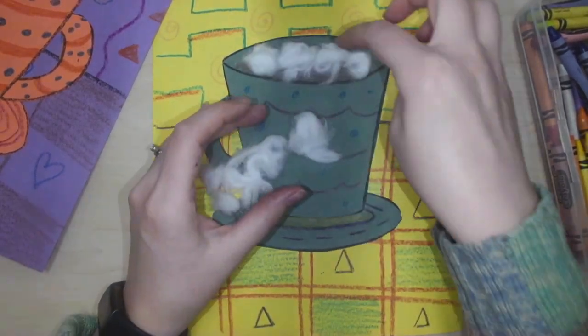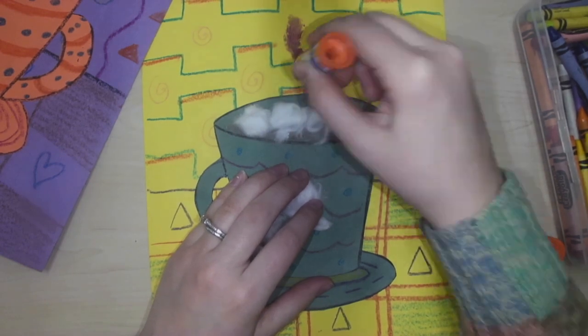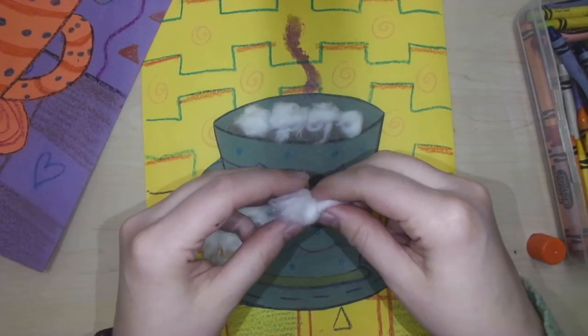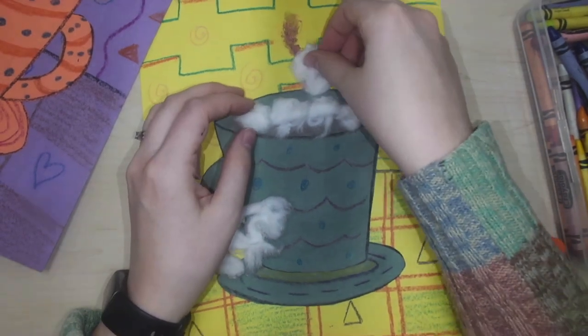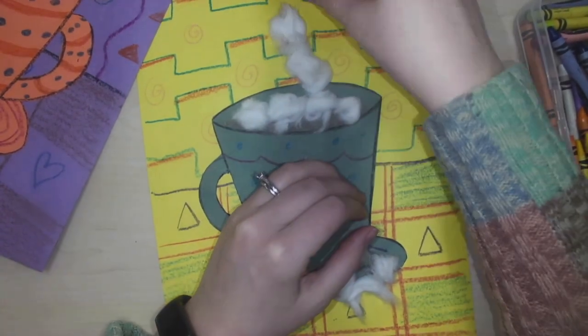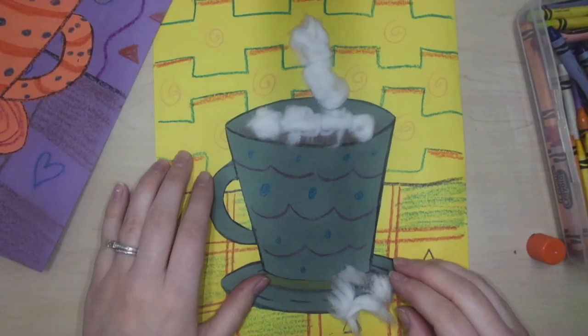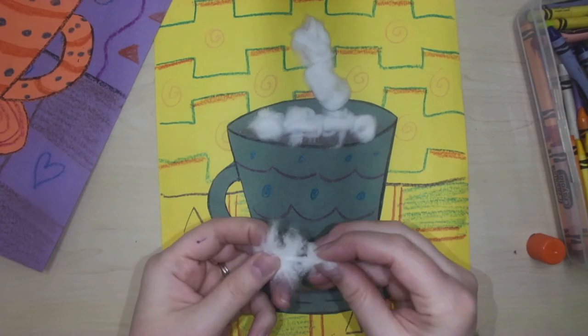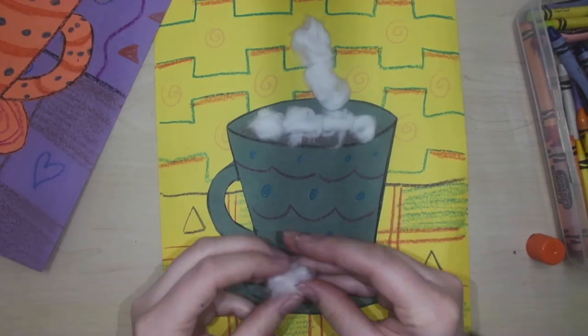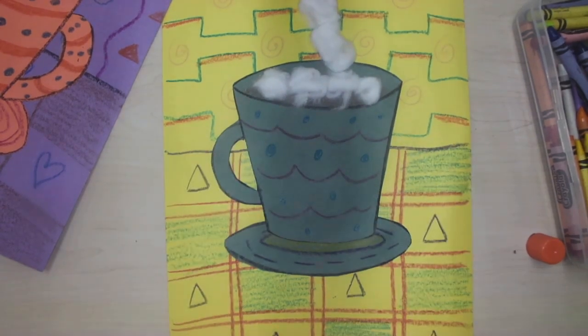If you want some steam coming up off of your mug, then you could even draw a curvy line coming up from your mug with your glue, and you can stick your fluff to that curvy line too. Now it looks like there's steam rising up out of your mug. If you have extra fluff, you can share it with a neighbor, or we'll just throw it away. Now we have our warm hot cocoa ready to go.